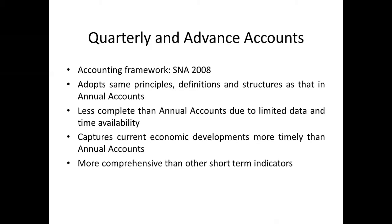The Quarterly Estimates capture current economic development more timely than Annual Accounts. The Quarterly Estimates are released with a time-lag of only two months, whereas the Annual Estimates are released with a time-lag of around 10 months or more. The Quarterly Estimates are more comprehensive than any other short-term indicators. Let us try to understand this with the help of IIP, the Index of Industrial Production.